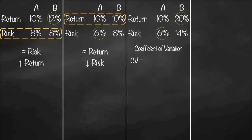The coefficient of variation, or CV, is calculated as risk divided by return. When we divide risk by return, we get the relative risk to return — we unify the return to be 1, and then choose the lowest risk. For investment A: the risk is 6 divided by return of 10, giving us a CV of 0.6.